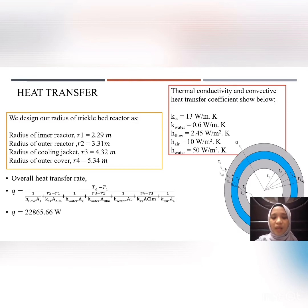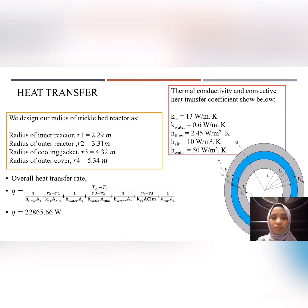This is the formula for finding the resistance. This shows the radius of the trickle bed reactor. These are the coefficients for thermal conductivity and convective heat transfer coefficients. Using these equations, we find that the overall heat transfer rate is 22,865.66 watts.